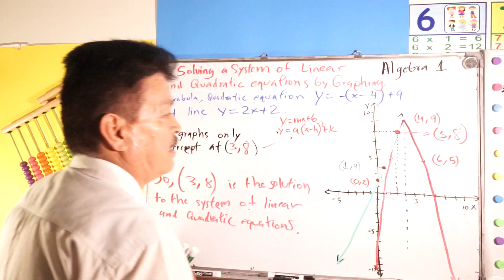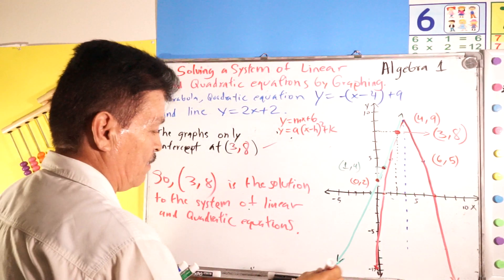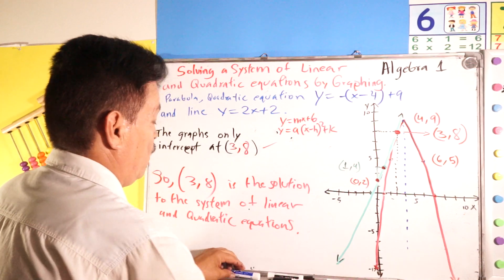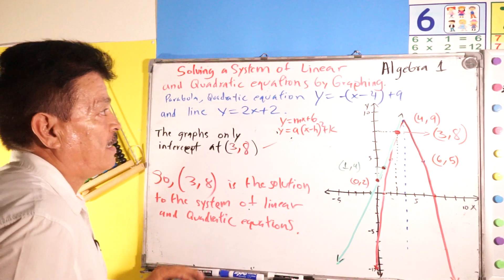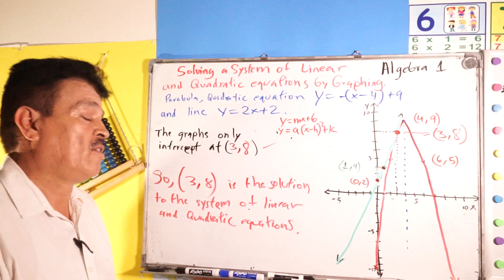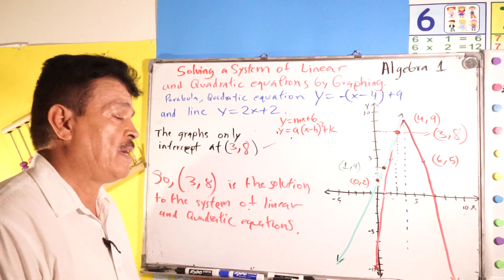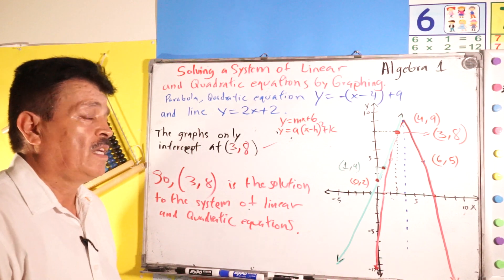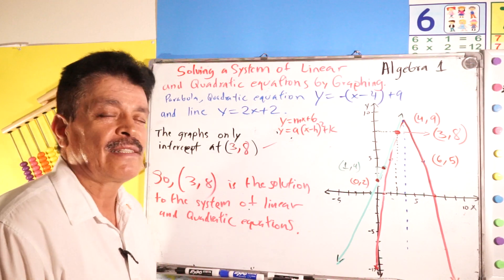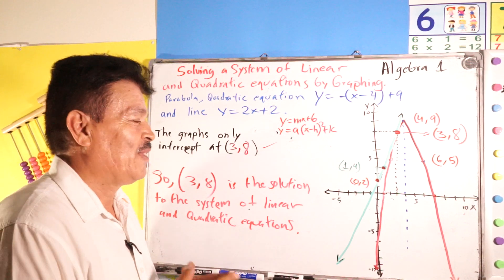The solution to the system of linear and quadratic equations is the point (3, 8). That's it for today. Remember this main idea in math — if you discover the power of mathematics, you can unlock your infinite potential.